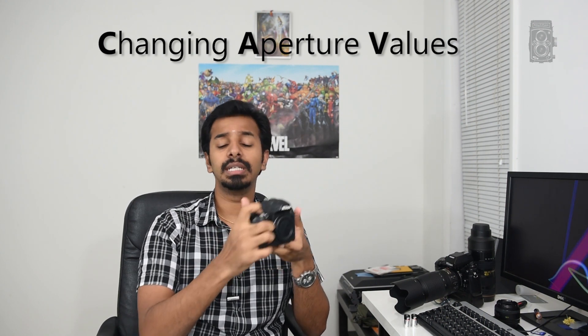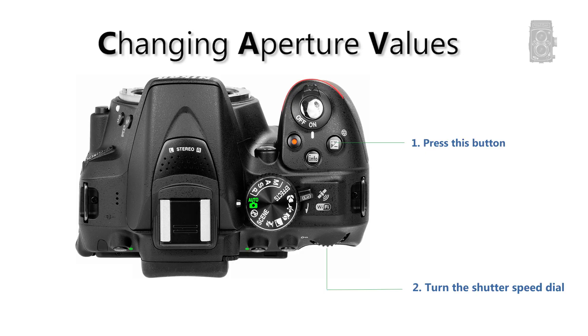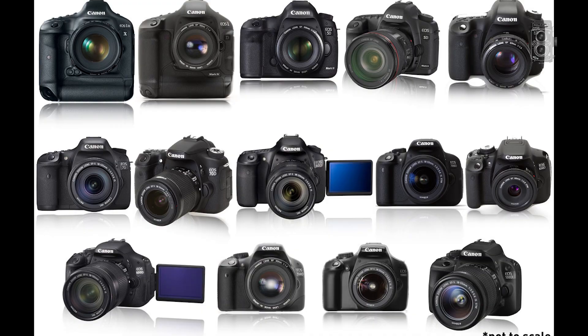Press it and turn the back dial — the aperture values will change. If you have a Canon camera, click here to see how to change the aperture values in your Canon cameras.